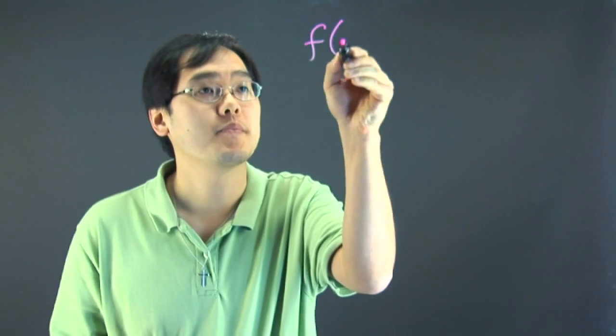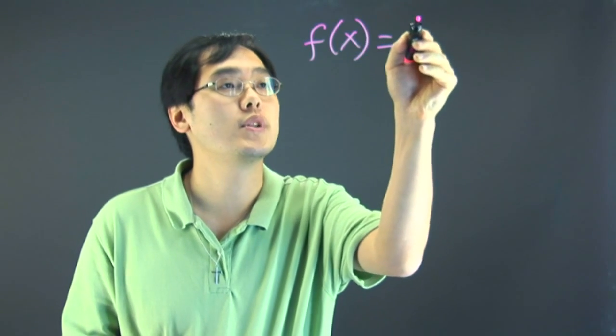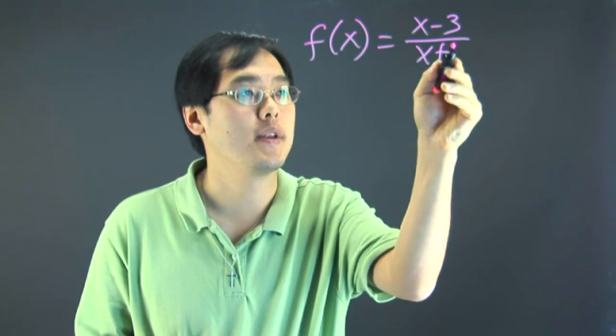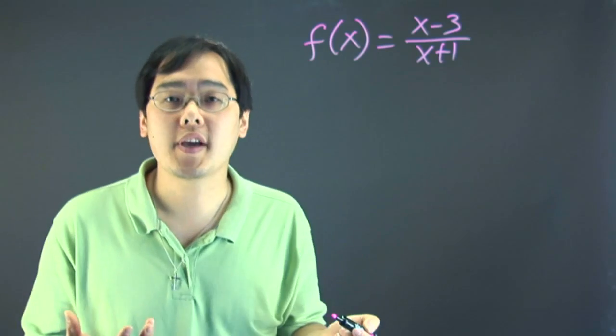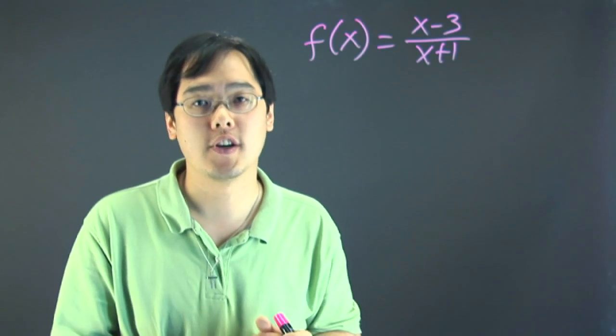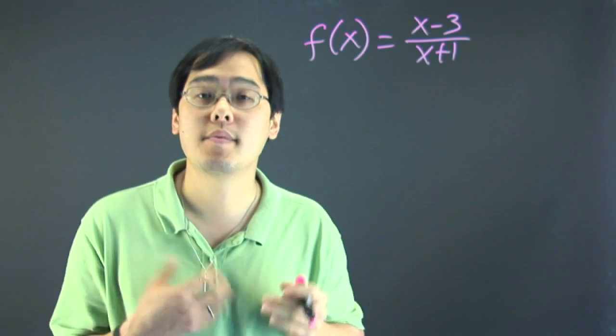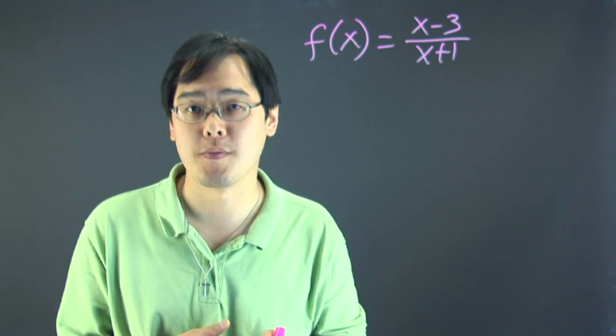Suppose you have f(x) is equal to x minus 3 over x plus 1. Now the one thing you want to think about with any rational function is you really want to consider its domain before you can find out its x and y intercepts because there might be some numbers for x that you're not allowed to use from the get-go.